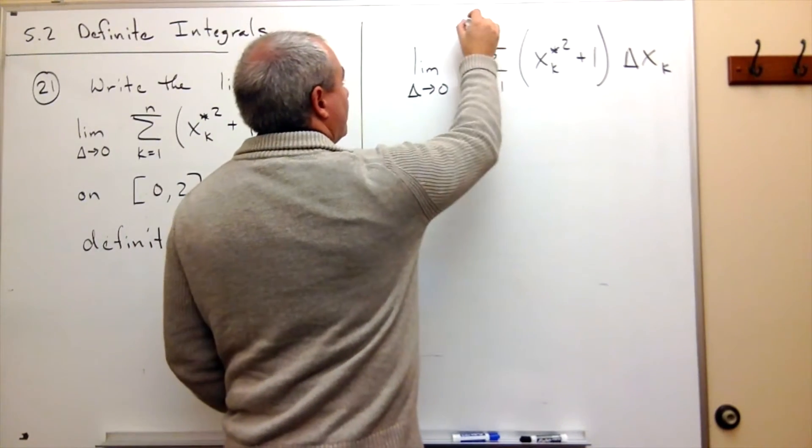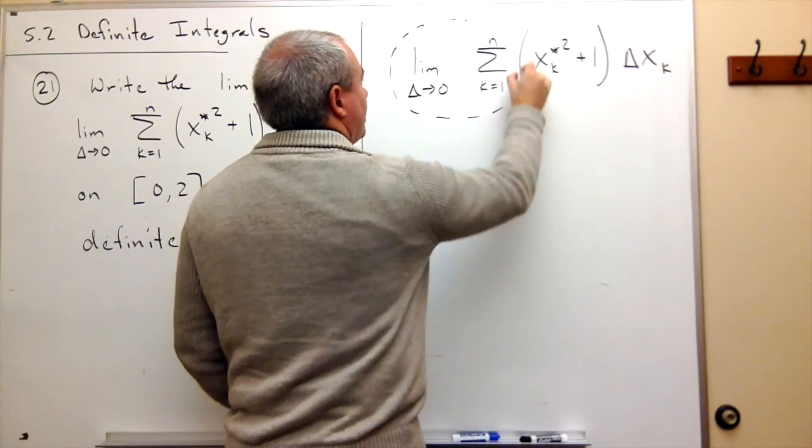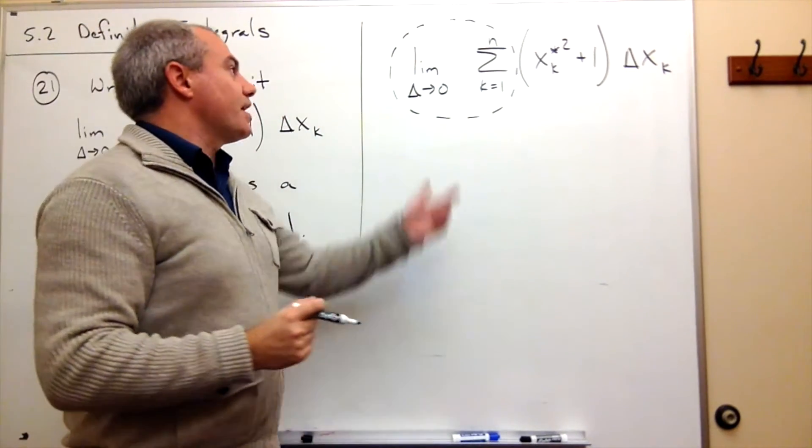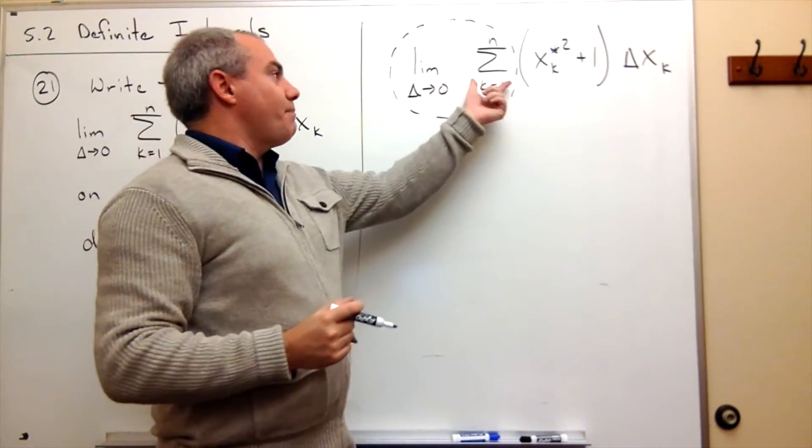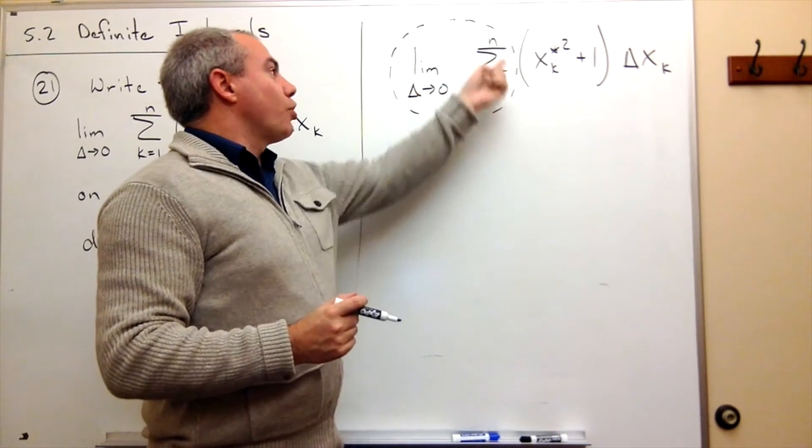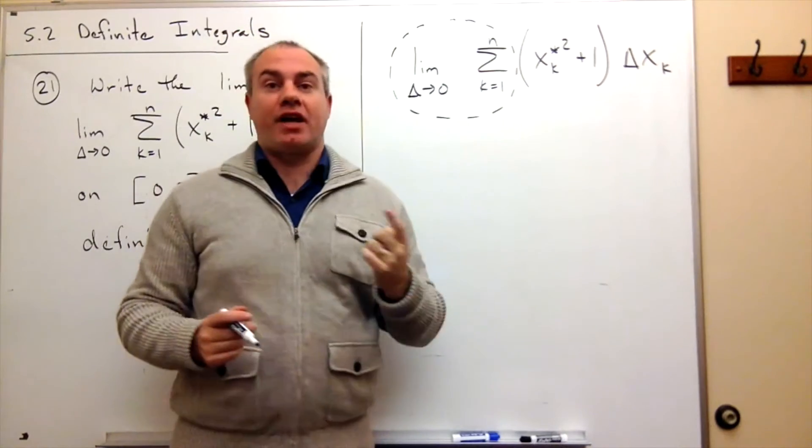The first thing we have is the limit of a sum. So basically we're saying let's add up a bunch of rectangles and let those rectangles get small. So we're adding up a bunch of things.